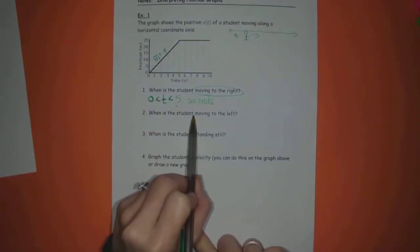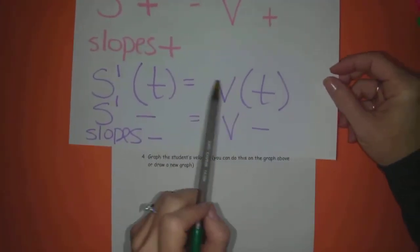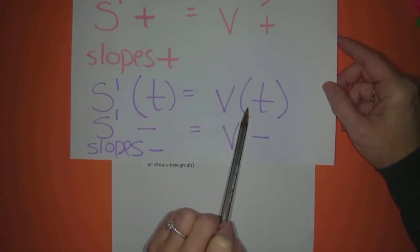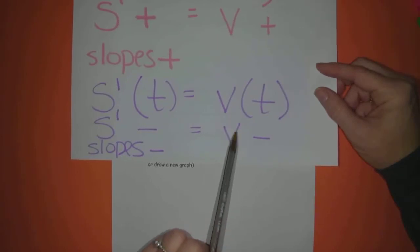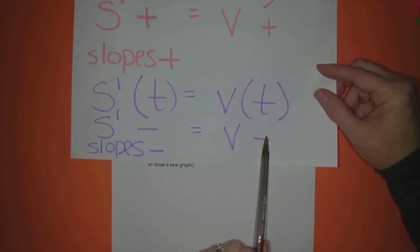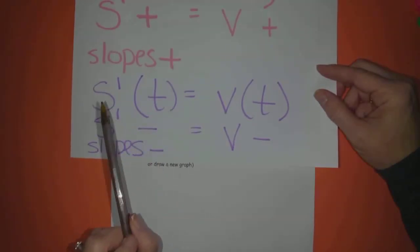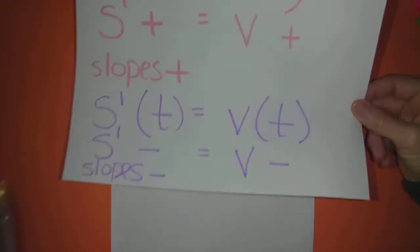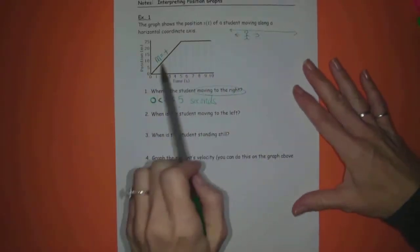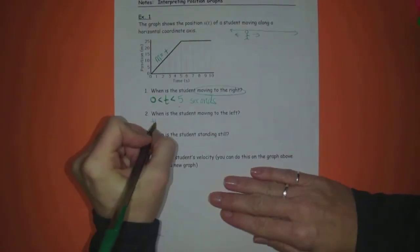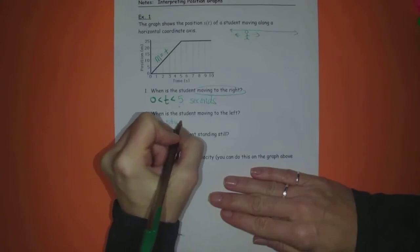Number 2. When is the student moving to the left? Well, in purple here, you'll see the same idea. The derivative of S gives us V. So leftward movement would be when V is negative or when S' is negative since they're equal. So the slopes of the tangent lines would have to be negative on the graph of S. Well, when you look here at this graph, I don't see any negative slopes. So I'm just going to say the student does not move left.